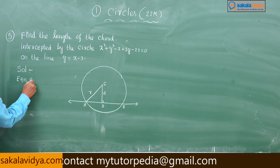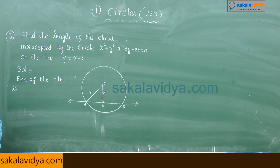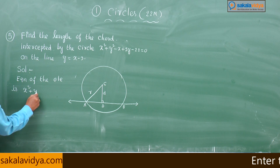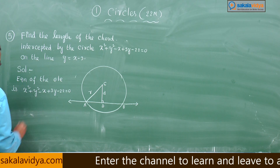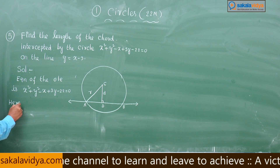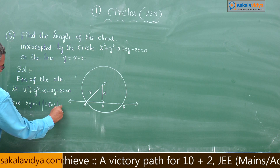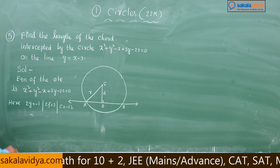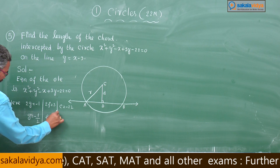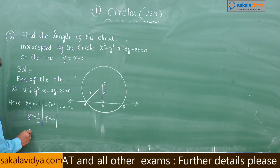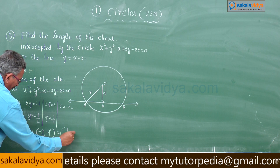The equation of the circle is x² + y² - x + 3y - 22 = 0. Here 2g = -1, so g = -1/2; 2f = 3, so f = 3/2; and c = -22. Therefore the centre C is (-g, -f) = (1/2, -3/2).